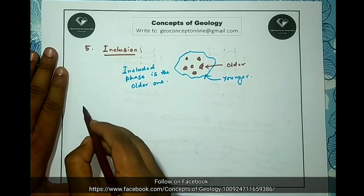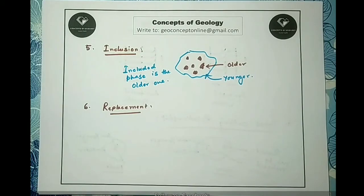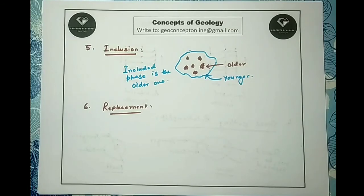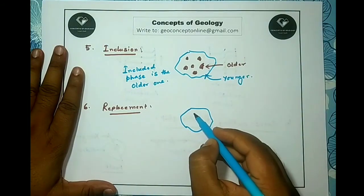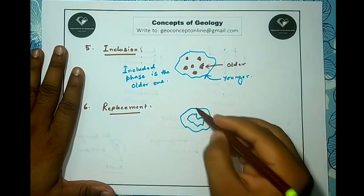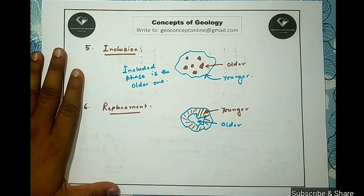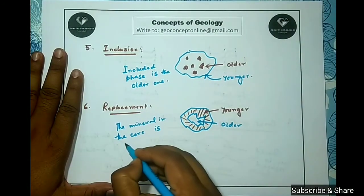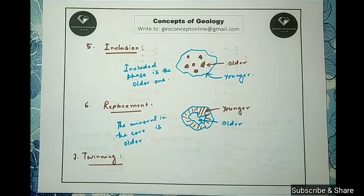The next feature — number six — is replacement, which is very important in determining paragenesis. The mineral being replaced is older than the one replacing it. Since replacement is generally a surface chemical reaction, it usually proceeds inward from the crystal boundary or along fractures. After advanced replacement, the older replaced phase may remain as residual islands within the matrix of the new phase. Normally, the mineral in the core is older, as replacement proceeds inward.